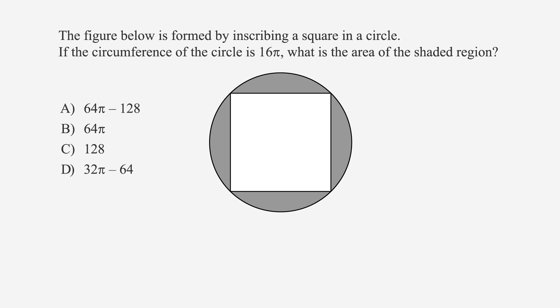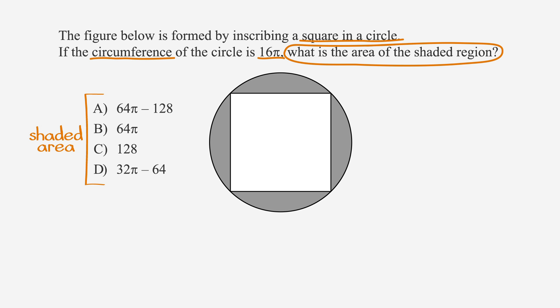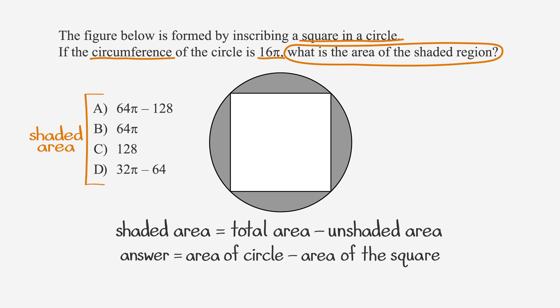Let's work through a problem together. The figure below is formed by inscribing a square in a circle. If the circumference of the circle is 16π, what is the area of the shaded region? We'll underline the facts and circle the key terms. Then we want to label our answer choices, which are possible values for the area of the shaded region. Since we're looking for the area of the shaded region, that means we need to use the equation shaded area equals total area minus unshaded area, or the area of the circle minus the area of the square, to find the answer. But in order to do that, we need to find the area of the circle first. We are told that the circumference of the circle is equal to 16π.